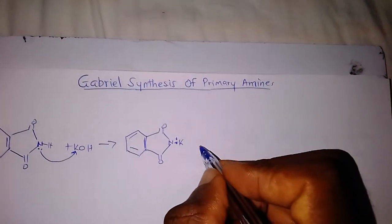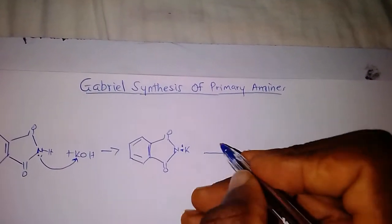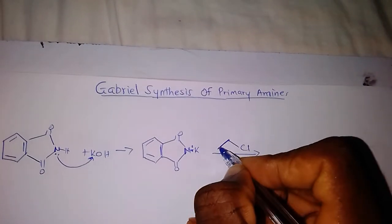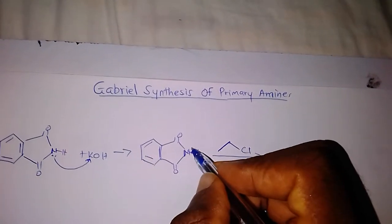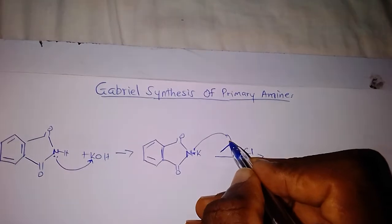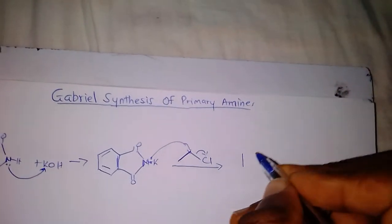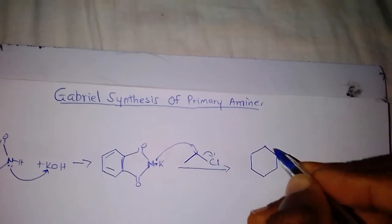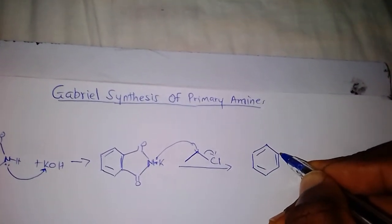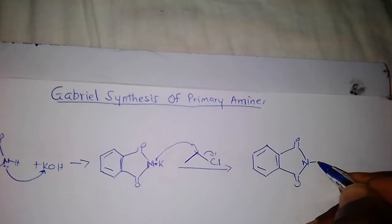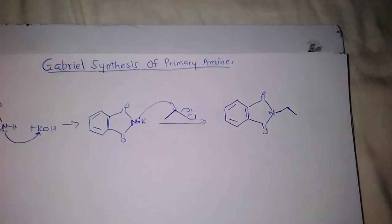You are going to react this with an alkyl halide. There is going to be a reaction between this nitrogen and the alkyl portion of the alkyl halide. We are going to react this nitrogen with this carbon, and there is going to be cleavage of the halogen — the chlorine — to generate an N-alkyl phthalamide.